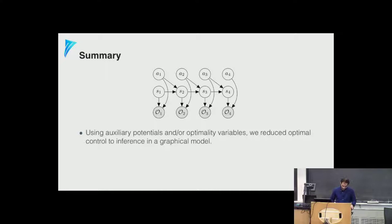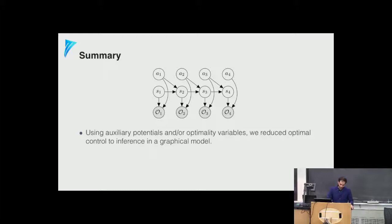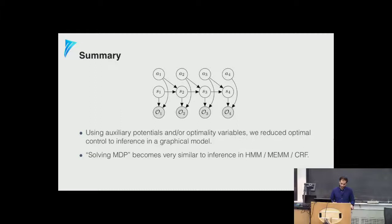Summary so far: we introduced auxiliary optimality random variables, augmented the Markov process with them, tied their probability of being 1 to the reward at each timestep, and reduced optimal control to inference via message passing — computing forward and backward messages. Solving the MDP in this form is similar to inference in HMMs or CRFs. The approach is similar to the dynamic programming used for standard V and Q functions.